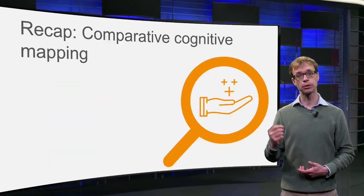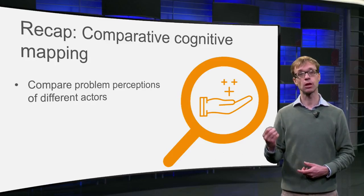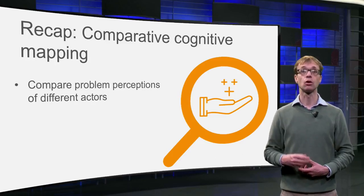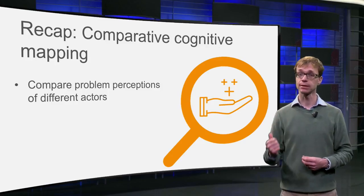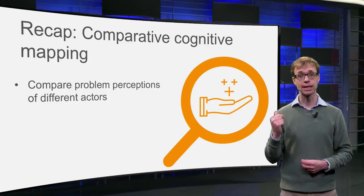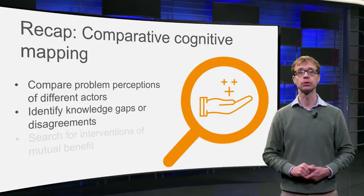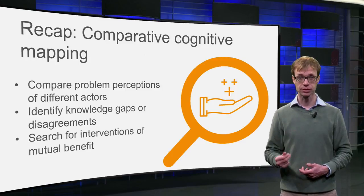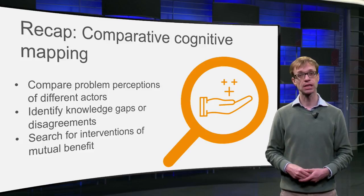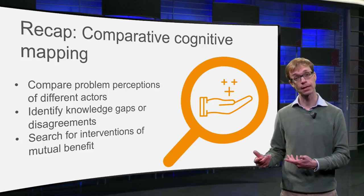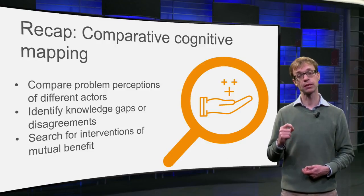So, in summary, cognitive maps help you to capture the problem perceptions of decision makers. Comparing the perceptions of different actors helps to understand their decisions, helps to identify knowledge gaps or disagreements about the evidence base, and may enable you to propose interventions that are of mutual benefit. The next question obviously is how to construct and analyze these cognitive maps. We will look into this in our next clips.